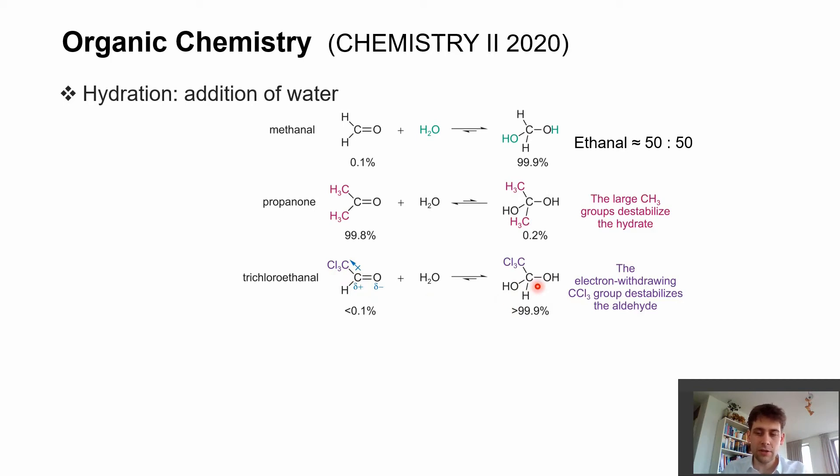In general, you rarely find this gem diol structure of carbonyl components, and this is formulated in the Erlenmeyer rule, which states that there are very few organic components that have two hydroxy groups attached at the same carbon atom because they would always eliminate water and form the respective carbonyl component. Notable exceptions we've just discussed are trichloroethanal and methanal. These break the Erlenmeyer rule, but in general the carbonyl component is more stable.